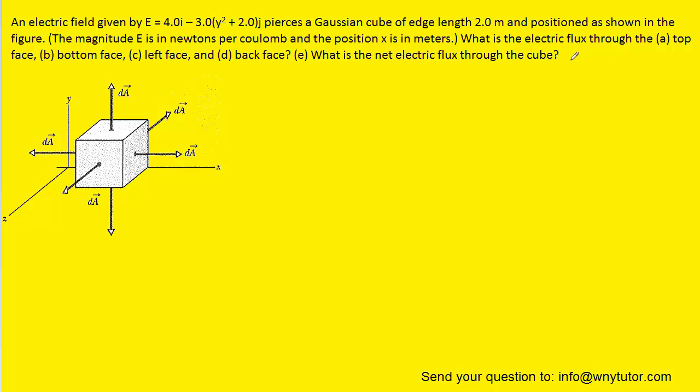To calculate the electric flux through any surface of this cube, we'll have to consider the definition of electric flux. According to that definition, the electric flux, symbolized by the Greek letter phi, is equal to an integral taken about an entire closed surface of the dot product between the electric field and the differential area vector.